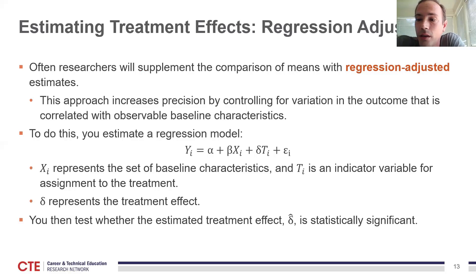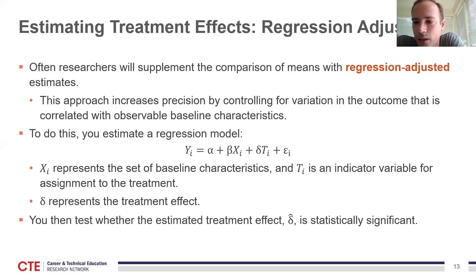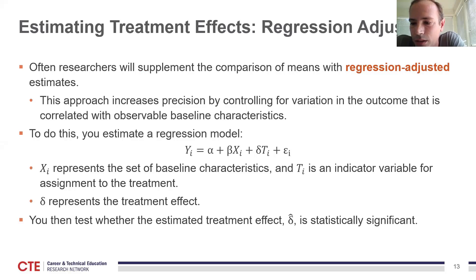In the regression equation, the term X_i represents the set of baseline characteristics you want to control for, and T_i is an indicator variable equal to one for observations assigned to the treatment group. The treatment effect is represented by the parameter delta. Standard statistical hypothesis testing will then show whether the estimated treatment effect is statistically significant.